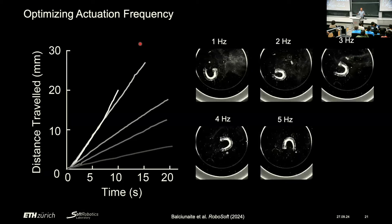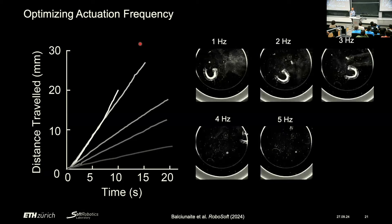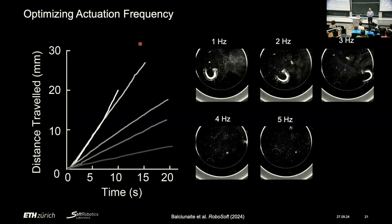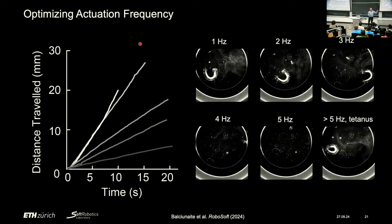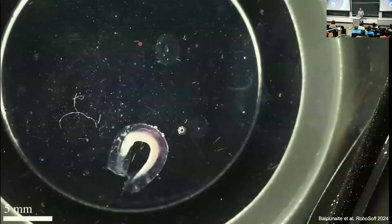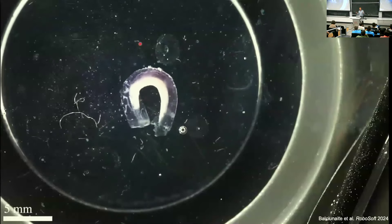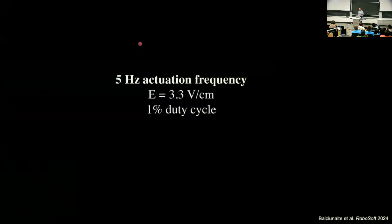If you go above five hertz, it stalls. Why? Just like a human muscle that you over-train or over-actuate — it cramps. The same thing happens here: we get tetanus-like behavior, the muscle literally cramps up. It's interesting to explore these phenomena with this model system in a petri dish and then start building more complex systems from this recipe.